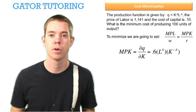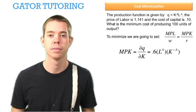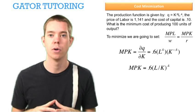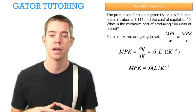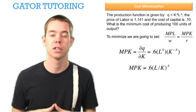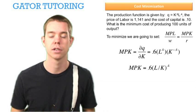K^-0.4 in the numerator is the same as K^0.4 in the denominator. So we have L^0.4 divided by K^0.4. Since both the numerator and denominator are raised to the same exponent, we can move the exponent outside the parentheses and simplify to 0.6(L/K)^0.4.